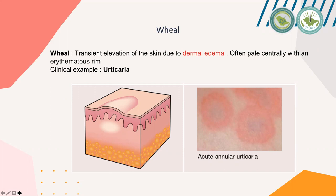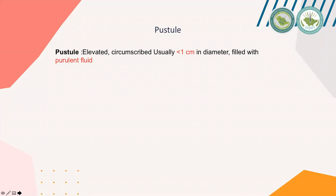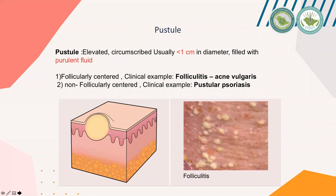Now we'll move to pustule. A pustule is an elevated, circumscribed skin lesion, usually less than one centimeter in diameter. It has the same definition as a vesicle, but the main difference is the content: a vesicle contains clear serous or hemorrhagic fluid, while a pustule contains purulent fluid. It could be follicularly centered, as in folliculitis or acne vulgaris, or non-follicularly centered, as in pustular psoriasis, where no skin follicle is involved in the pathophysiology.